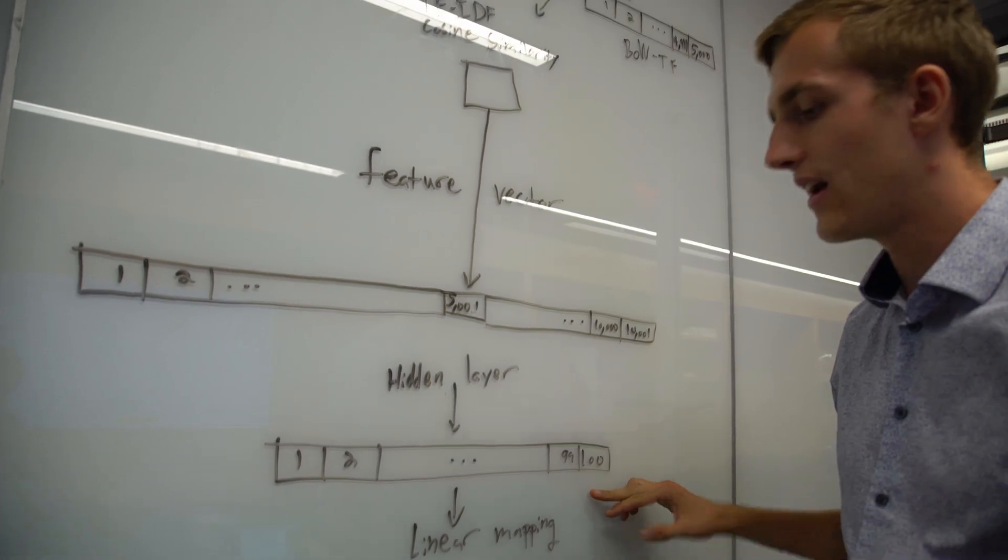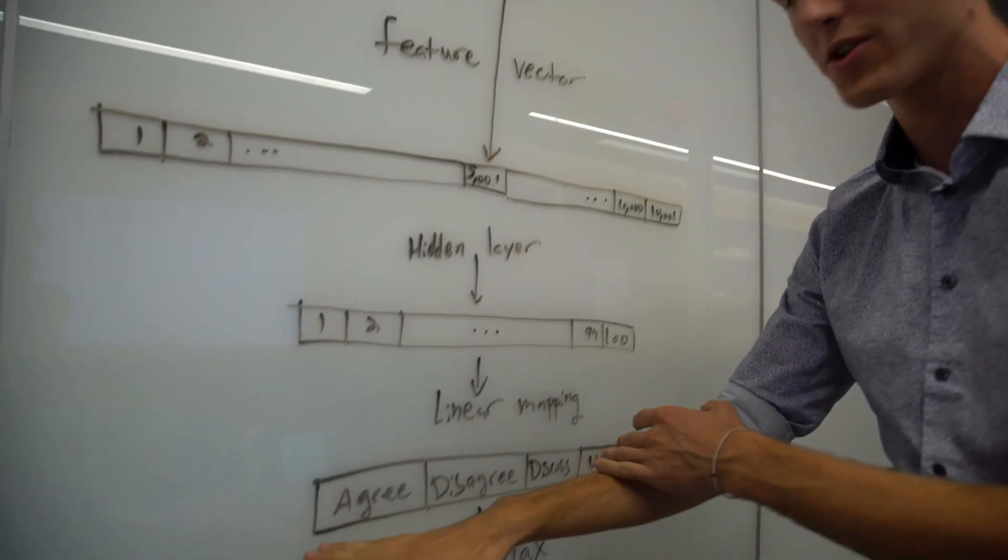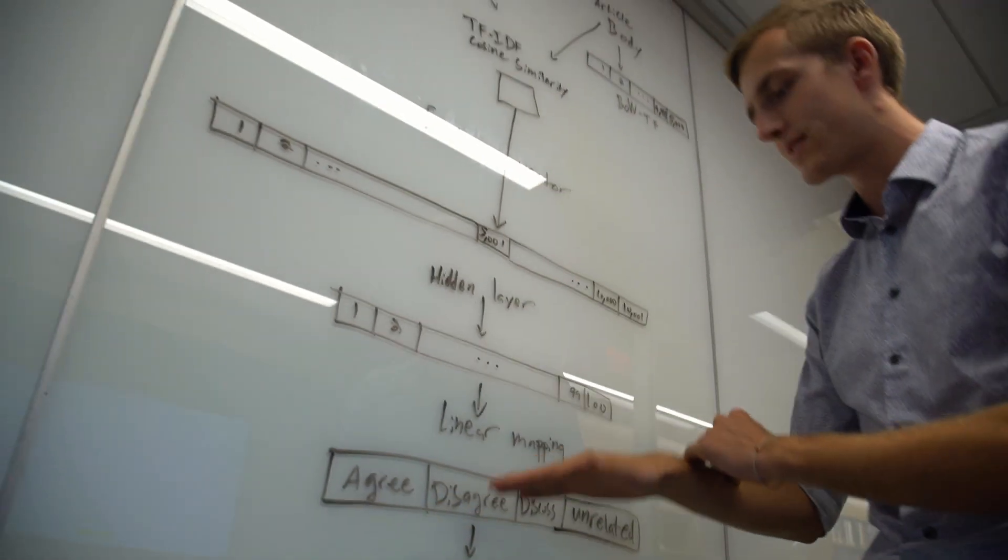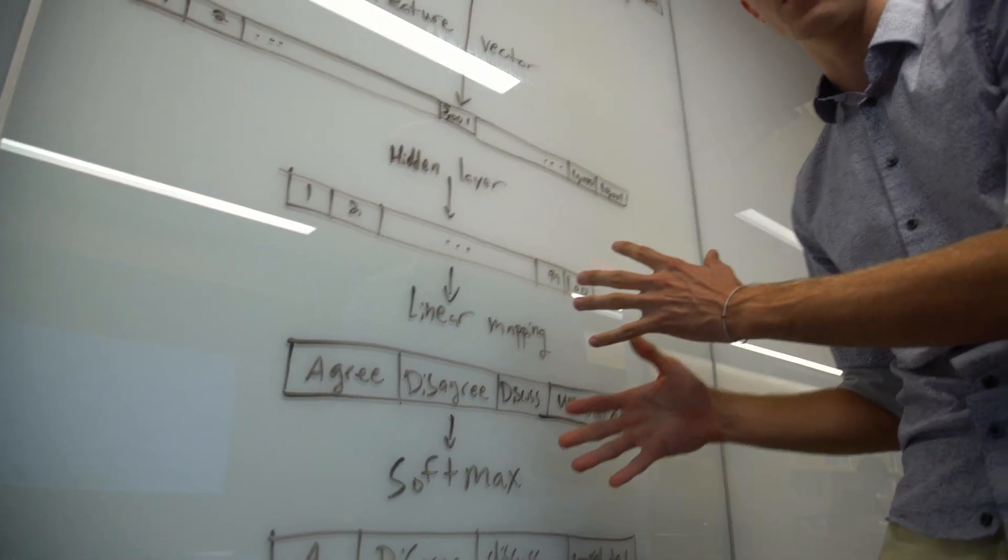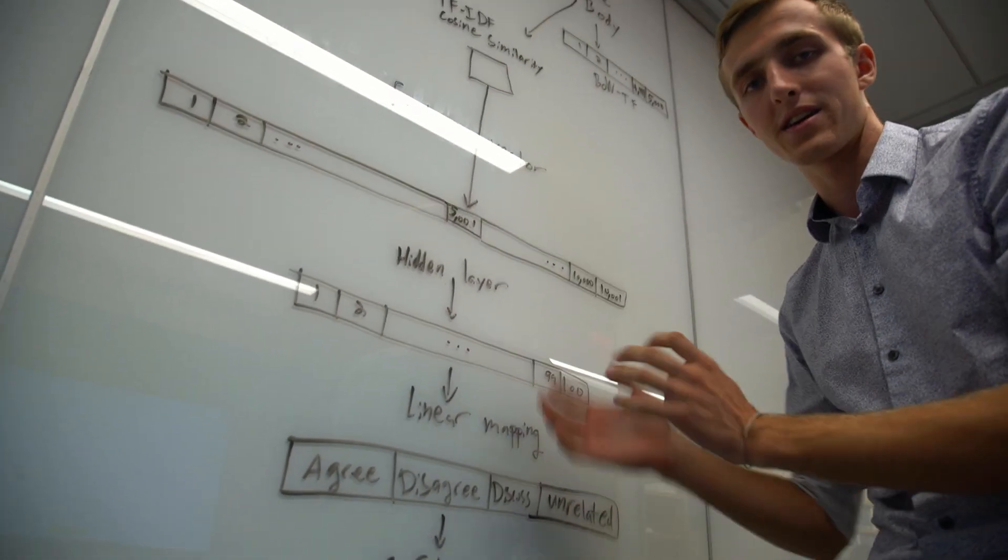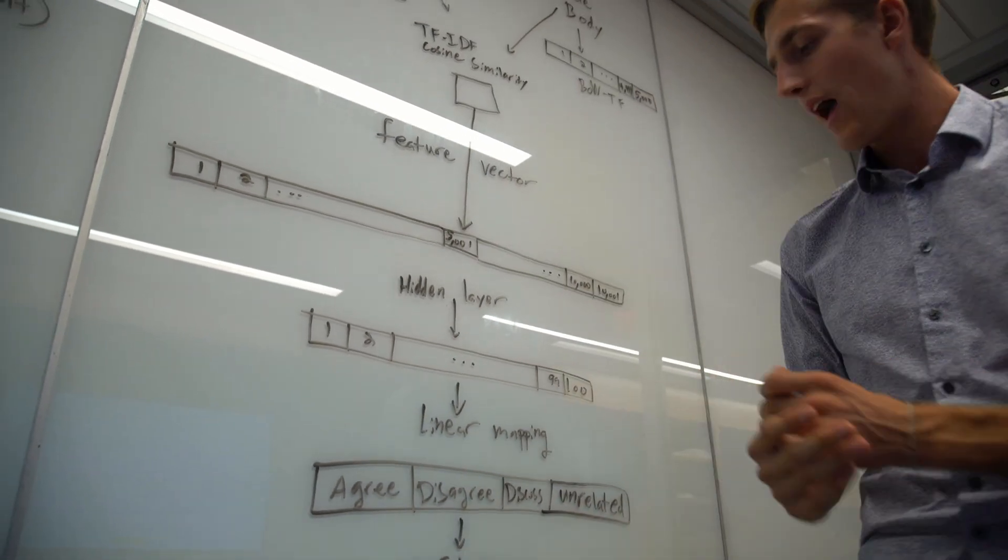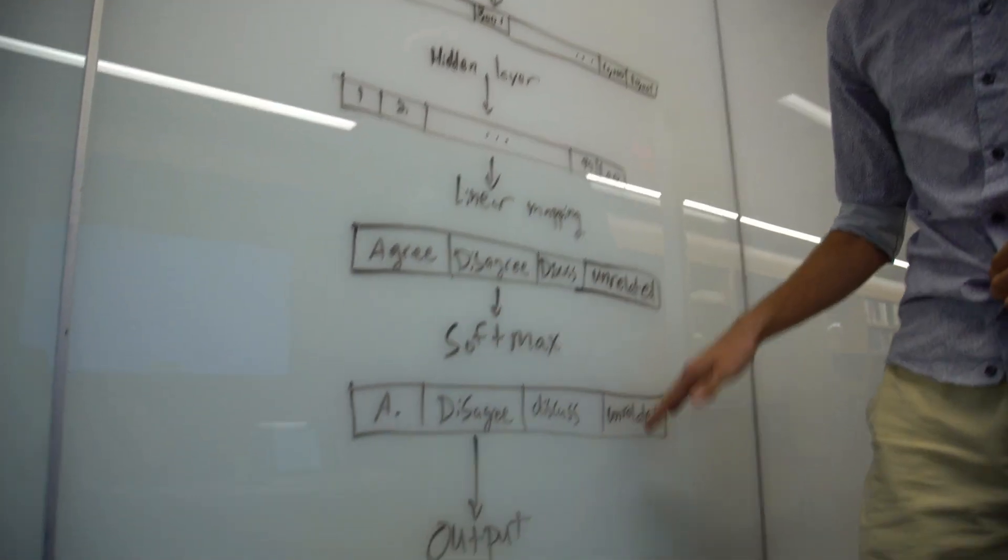That hidden layer is then linearly mapped to our four outputs: agree, disagree, discuss, and unrelated. Discuss means the article was neutral on the claim, it doesn't take a stance either agree or disagree. We softmax that to come out with our final output.